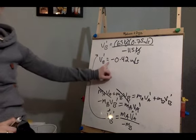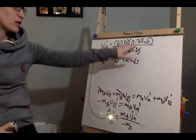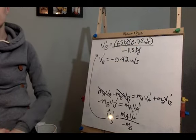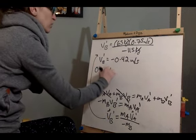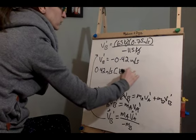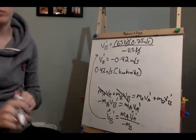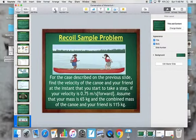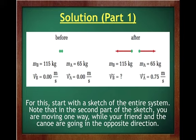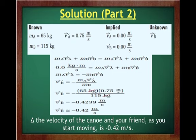The negative result is expected because we're dealing with an opposite reaction. If your forward direction is positive, the canoe moves in the negative direction — so −0.42 m/s, or equivalently 0.42 m/s backward. That's the conservation of momentum applied to recoil.